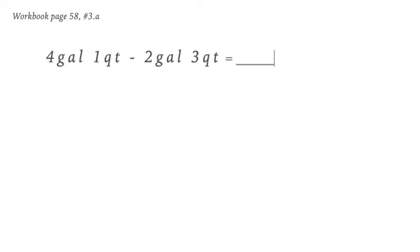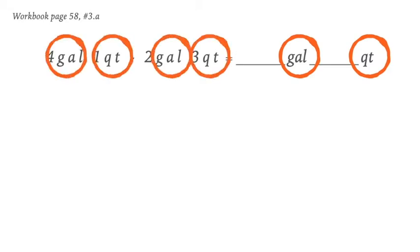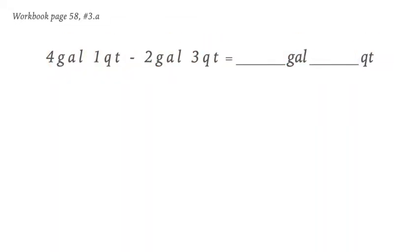Four gallons one quart minus two gallons three quarts is equivalent to... Again, let's look at the units that we are looking for. So we are looking for gallons and quarts. In our equation, we also have the same units, which means we do not need to convert anymore. We can just go ahead and solve this equation.